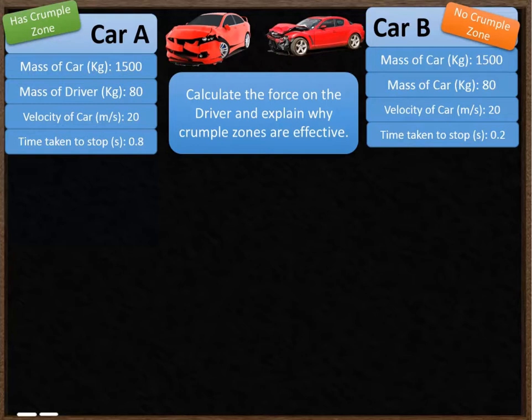One of the cars, car A, has a crumple zone. And car B doesn't have a crumple zone. As a result, car A stops in a much longer time, 0.8 seconds as opposed to 0.2 seconds for car B.